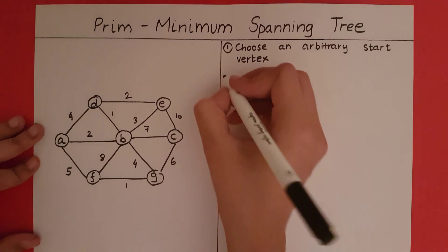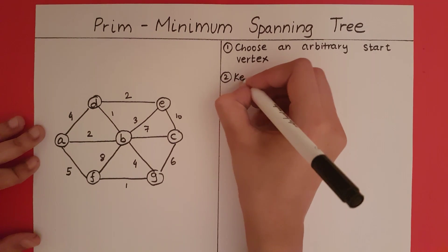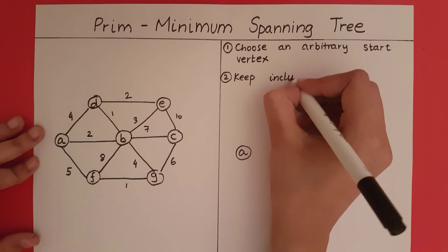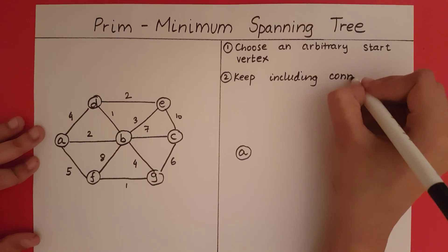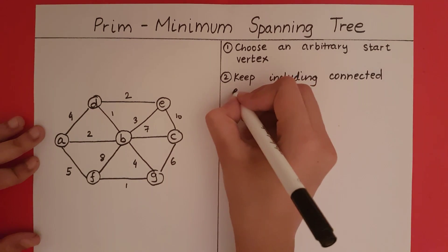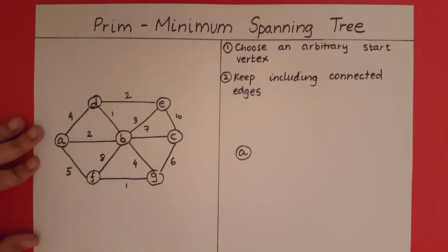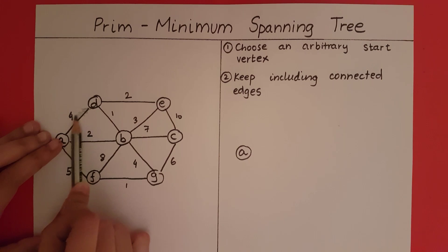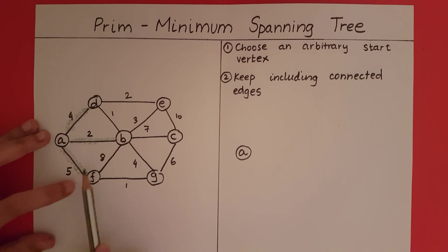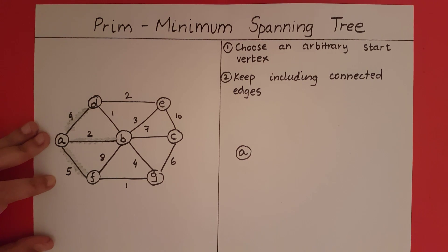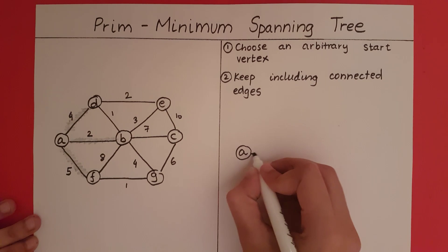In Prim's algorithm, we keep including connected edges into our MST. Let's see what the connected edges to A are — we have one edge here, another edge, and another edge. Which of these edges will we choose? We choose the minimum, which is the edge with weight 2.